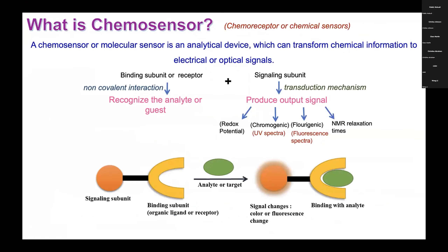A chemo sensor, or molecular sensor, is an analytical device which detects the analyte to produce a readable signal, which can be in the form of electrical or optical. It is comprised of two units: the binding subunit and the signaling subunit. The binding subunit is also called the receptor, which recognizes the analyte or gas. The analytes can be metallic ions or environmentally hazardous molecules. The signaling subunit produces a signal in the form of electrical, optical, or fluorescence.